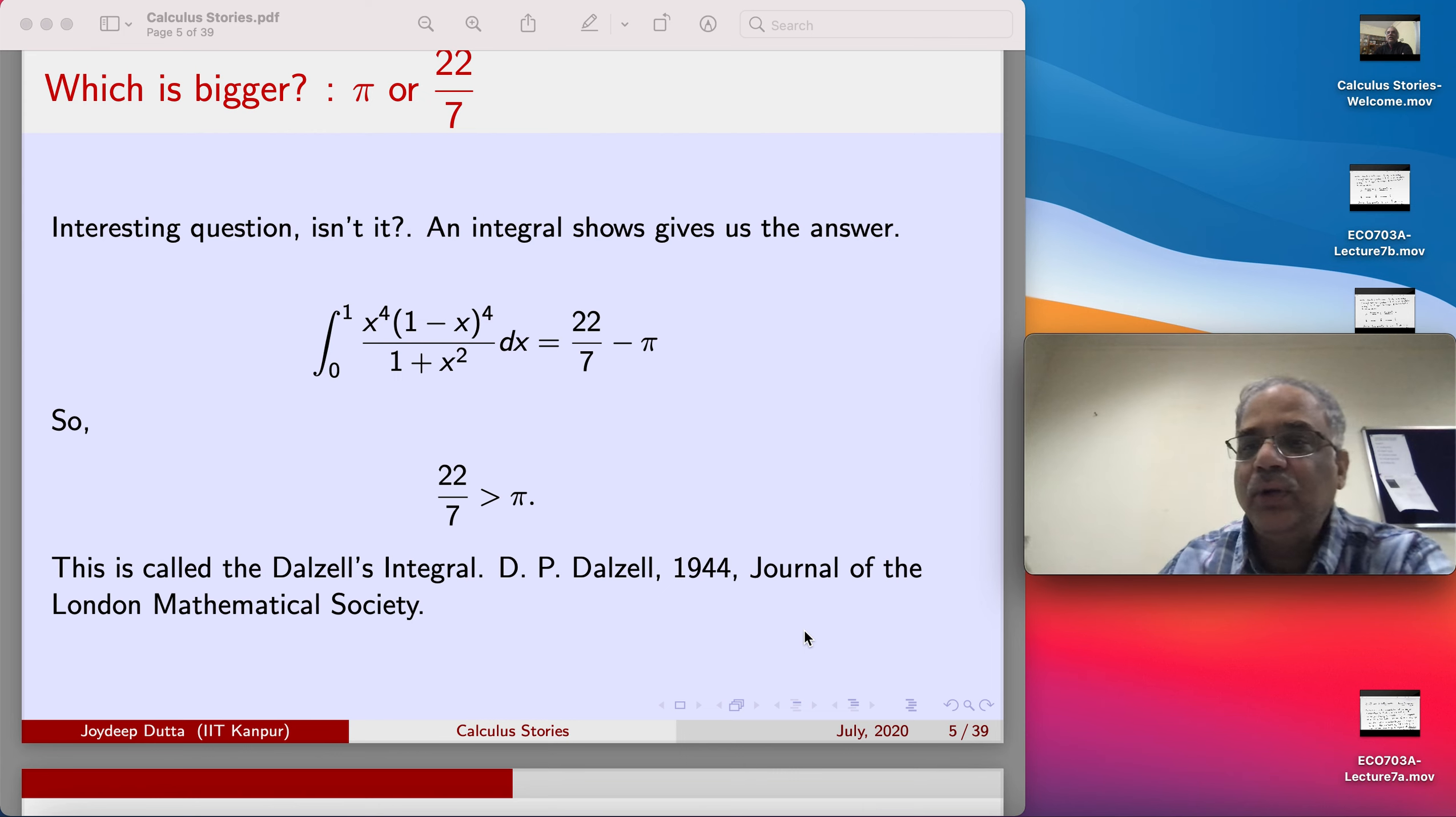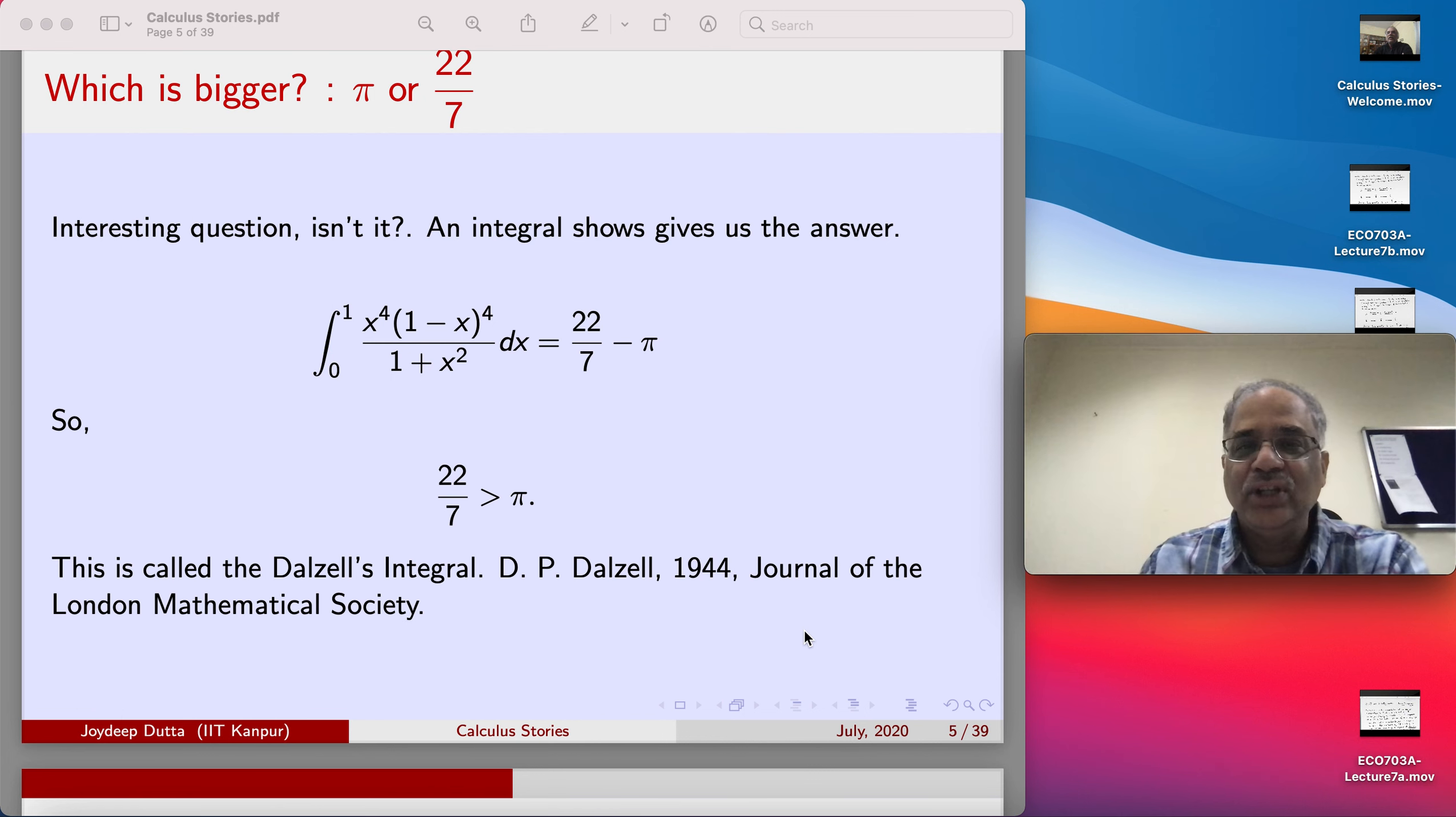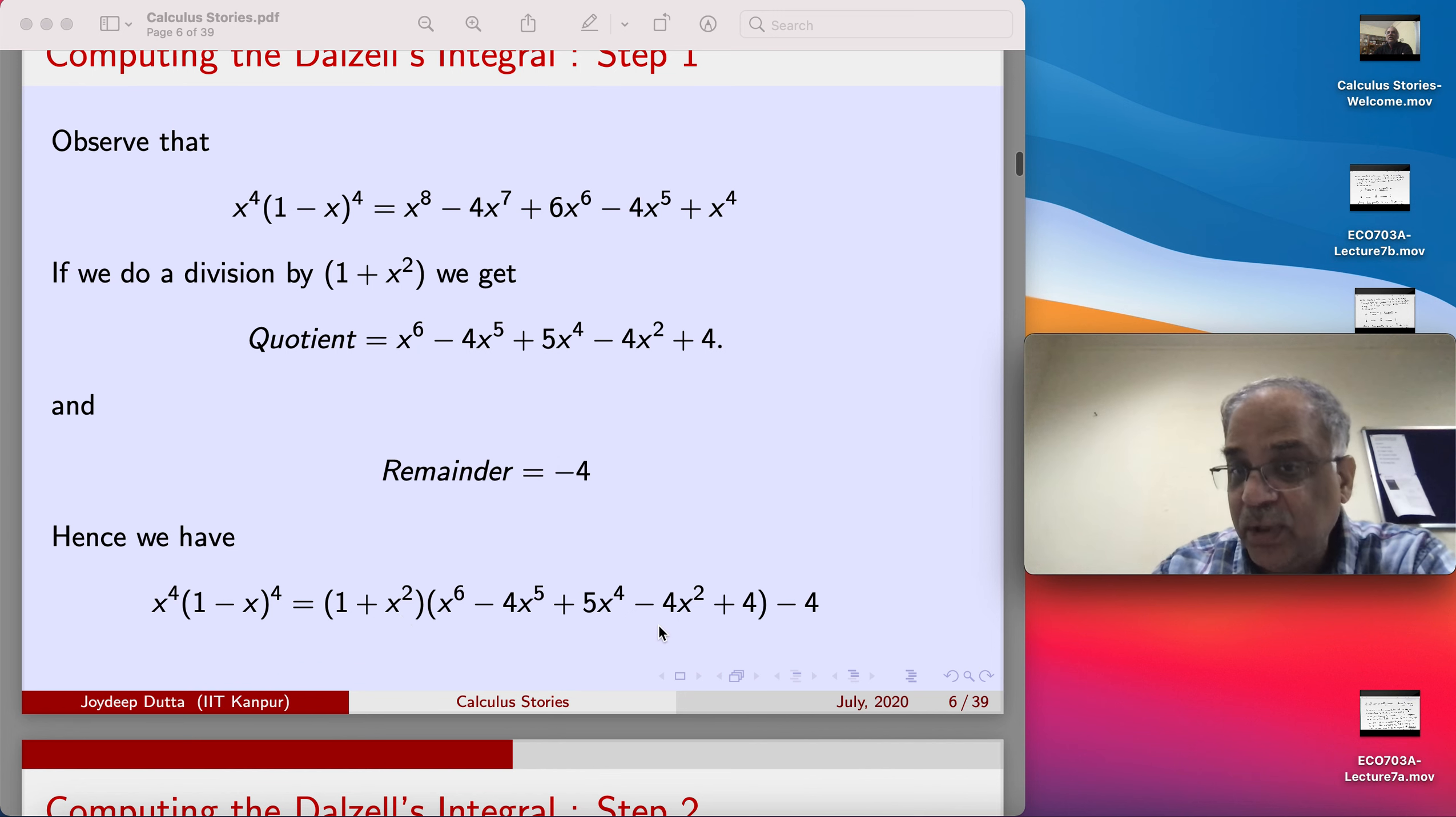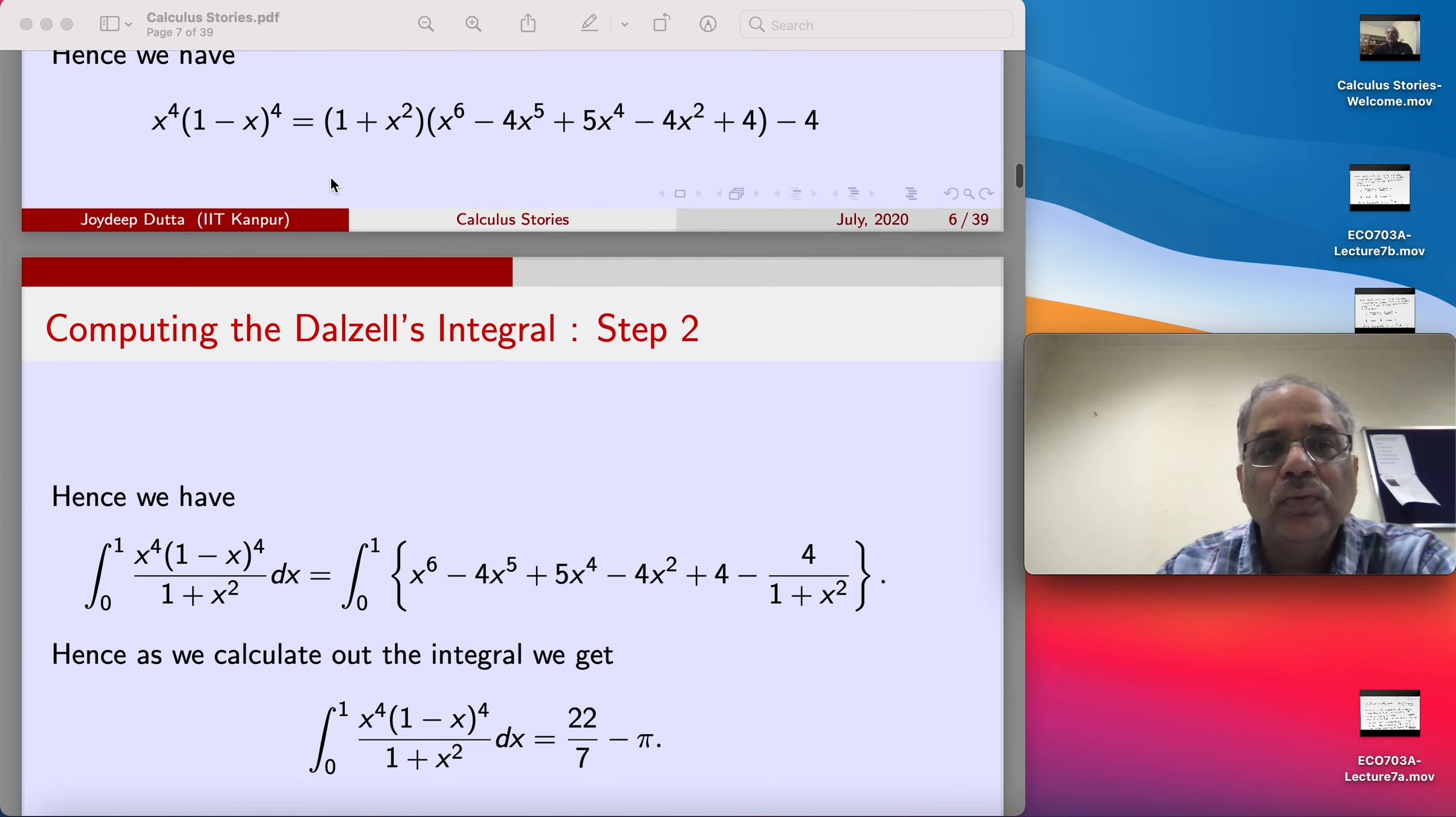So how would I do this? Basically I have to open up x^4 into (1-x)^4, I opened it up and then I do the division. You might say okay, you might have copied it from somewhere. I really did the division, my friends, just like a school kid. I did the division and that is the quotient and that is the remainder. So the dividend equals divisor times quotient plus remainder - Euclid's algorithm.